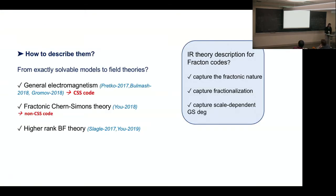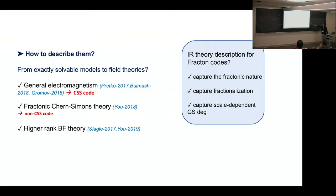We now have an almost infinite number of quantum stabilizer codes which are exactly solvable models, and their quasiparticle excitations really exhibit fracton behavior. The next step is whether there is any kind of field theory or field-theory-like description which can characterize all types of stabilizer code we are already familiar with. We know it's not a topological field theory, but to get a good effective field theory which captures the fracton nature, we have at least three minimal requirements.